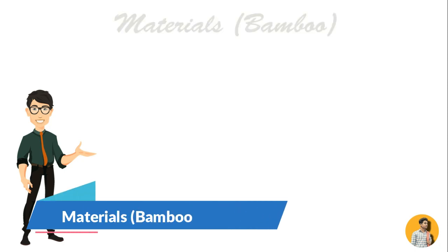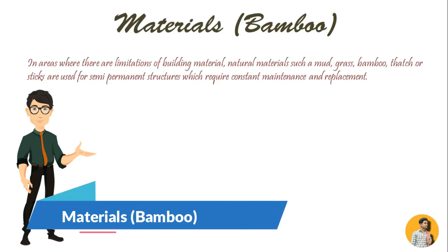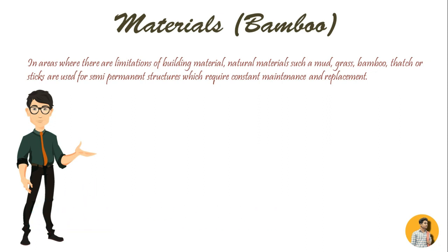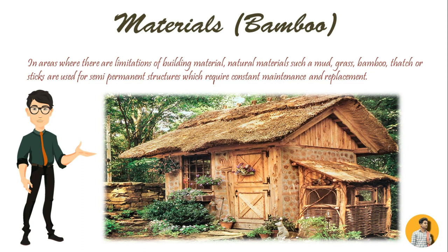Now let's talk about the material which is Bamboo. In areas where there are limitations of building material, natural materials such as mud, grass, bamboo, thatch or sticks are used for semi-permanent structures which require constant maintenance and replacement. The advantages of such architecture are that the construction materials are cheap and easily available and relatively little labor is required. Most of the bamboo structures are based on existing local technology which doesn't require high-tech to construct.